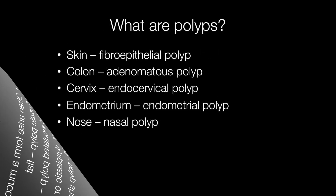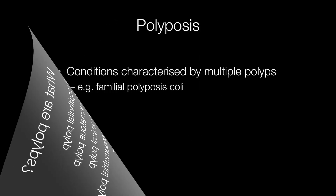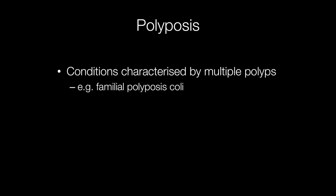Some very common polyps include fibro-epithelial polyps, adenomatous polyps, endosophical polyps, endometrial polyps, and nasal polyps, to name but a few. There are some conditions characterized by multiple polyps, and a very good example of this is familial polyposis coli.